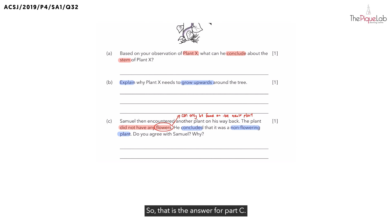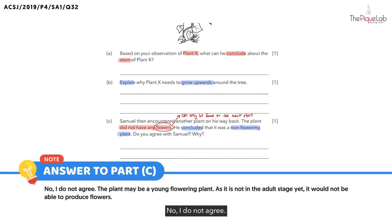So, that is the answer for part C. We can write down, No, I do not agree. The plant may be a young flowering plant. As it is not in the adult stage yet, it would not be able to produce flowers. So, that's the answer for part C.